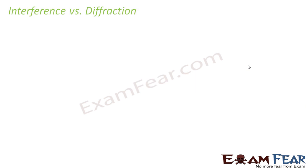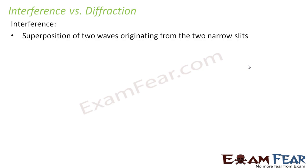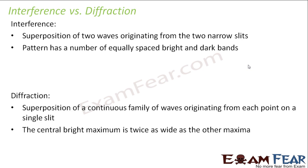Now, to understand the difference between interference and diffraction — because till now you might be thinking that in diffraction also we did the same thing, just that instead of two slits we used one single slit and the pattern obtained was a little different. In diffraction also, the light waves were interfering with each other and giving a resultant wave. So if you look at the difference, there is not much physical difference between interference and diffraction. Both of them are nothing but superposition of waves. We generally talk about interference when we have a small number of sources.